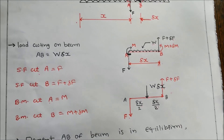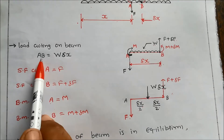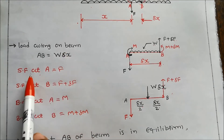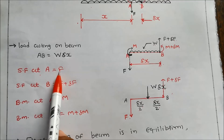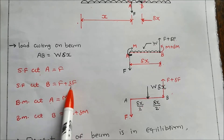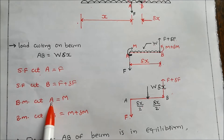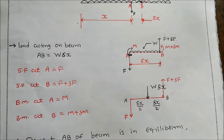So: load acting on beam AB is equal to W into delta x; shear force at A is equal to F; shear force at B is F plus delta F; bending moment at A is equal to M; and bending moment at B is equal to M plus delta M.